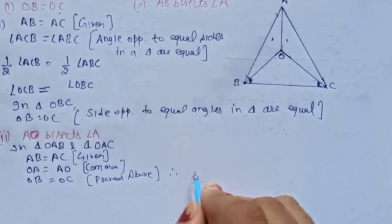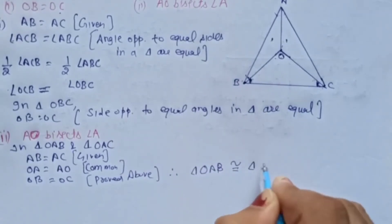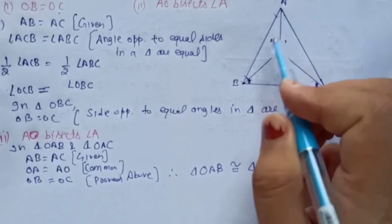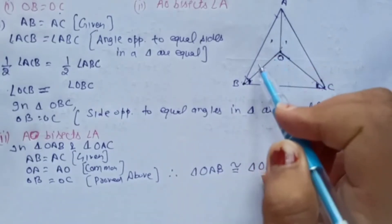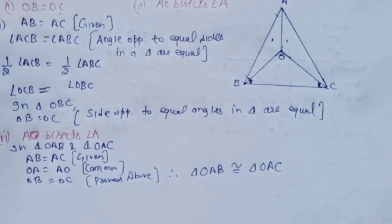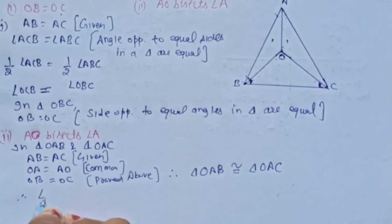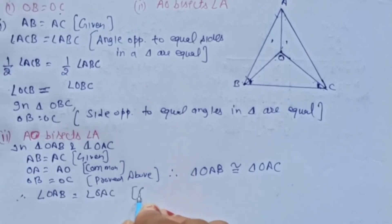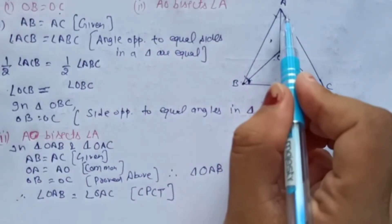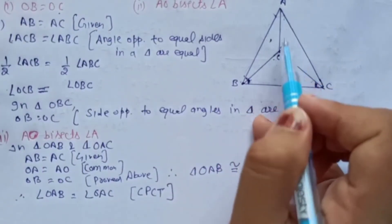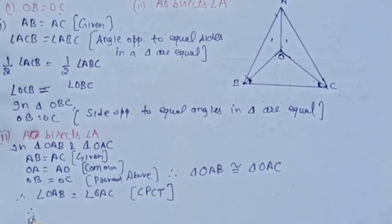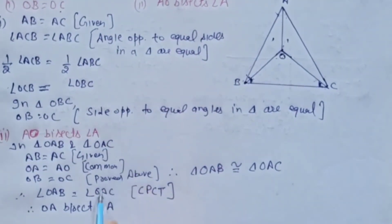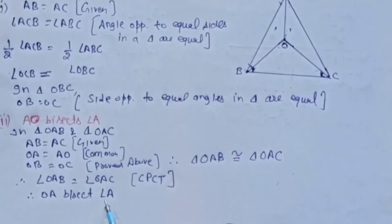So triangle OAB is congruent to triangle OAC. Agar dono hamari congruent ho gayi to hamara angle OAB equal to angle OAC ho jayega. Rule: SSS (Side-Side-Side). So angle OAB is equal to angle OAC, reason: CPCT. Agar yeh dono angles equal hain, means OA angle A ko bisect kar raha hai, kyunki bisect karega tabhi to dono angles equal honge. So AO bisects angle A — proved.